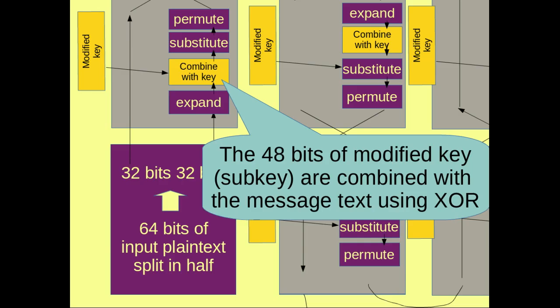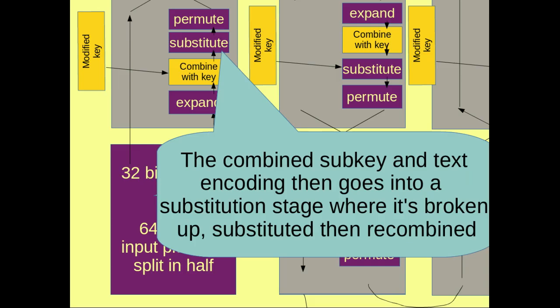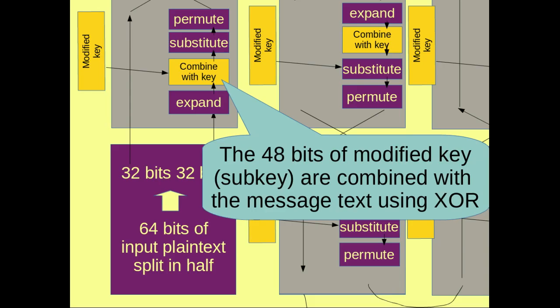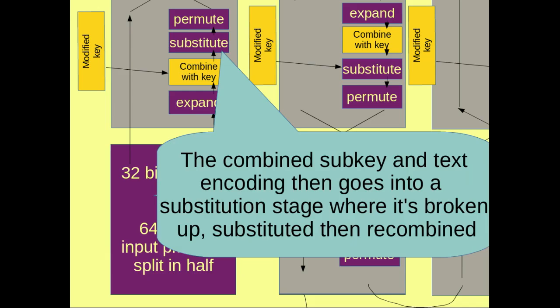The different parts of the algorithm use different keys. So each cycle uses a different modified key. And the combined sub key and text then go into the substitution stage where it's broken up, substituted and recombined.